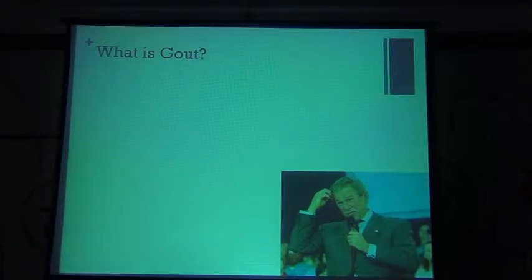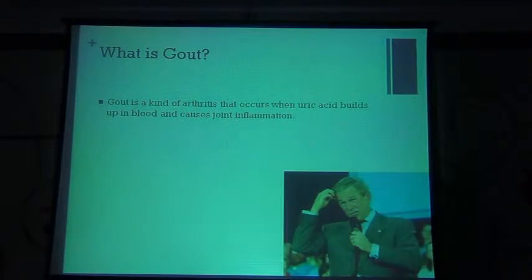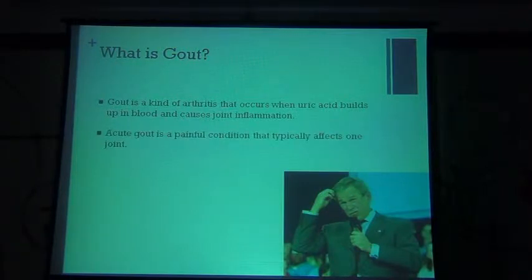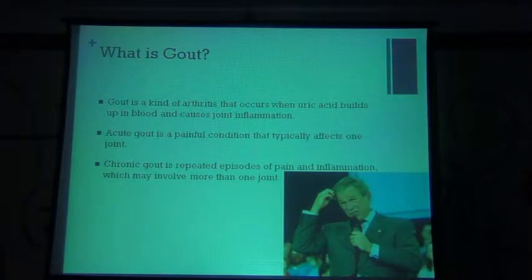Gout is an inflammatory arthritis brought on due to high uric acid in the serum. That uric acid must crystallize within the joint space, leading to joint inflammation. Acute gout is usually a painful condition affecting one joint — a monoarthritis — most commonly affecting the first metatarsophalangeal joint in the feet. Chronic gout occurs due to repeated inflammation, can affect more than one joint, and can be associated with tophi, which we rarely see these days due to good treatment.